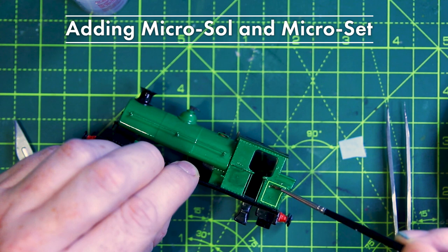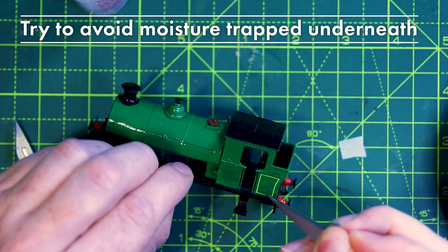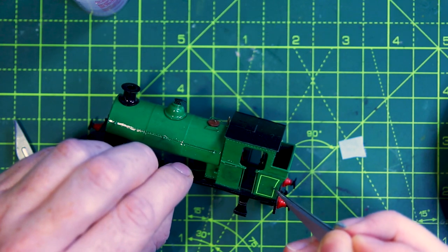The surface needs to be mildly moistened, not soaking wet. Moisture trapped under the transfer will cause wrinkles and reactions later on, so use your brush to soak up excess liquid, wiping it dry regularly.